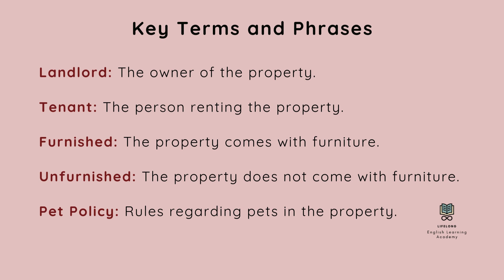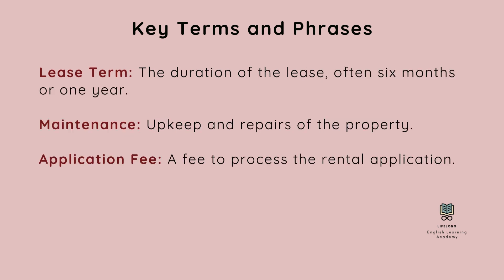Furnished: the property comes with furniture. Unfurnished: the property does not come with furniture. Pet policy: rules regarding pets in the property. Lease term: the duration of the lease, often six months or one year. Maintenance: upkeep and repairs of the property.